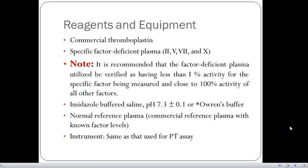For reagents and equipment, first we will need a commercial thromboplastin and specific factor deficient plasma, that is factor number 2, 5, 7 and 10. It is important to know that the factor deficient plasma utilized should be verified as having less than 1% activity for the specific factor being measured and close to 100% activity of all other factors.